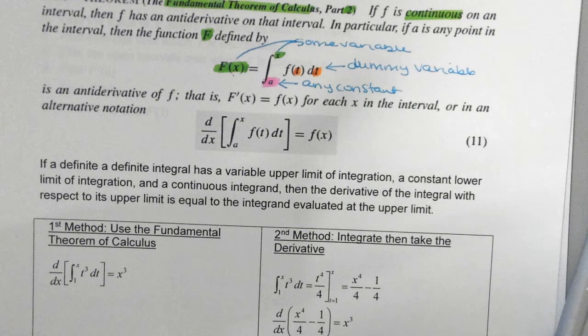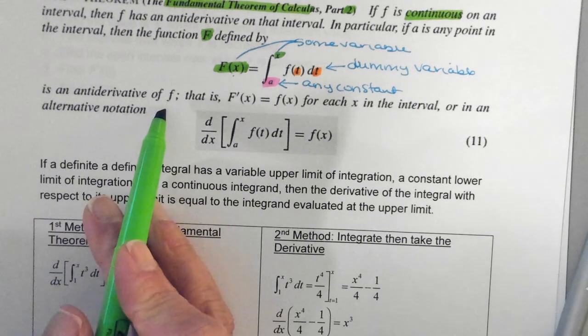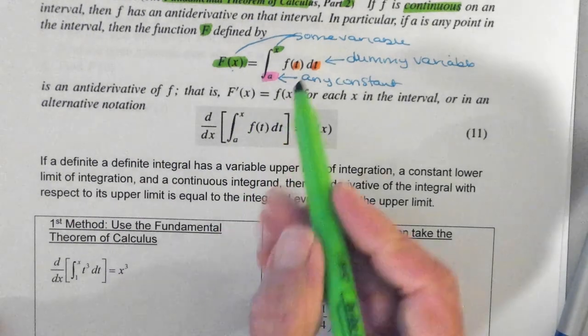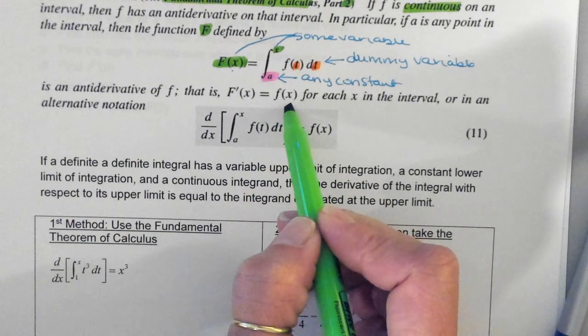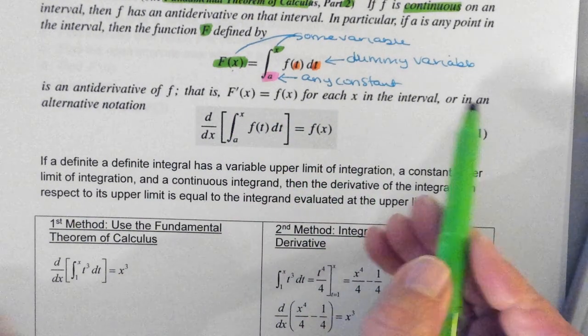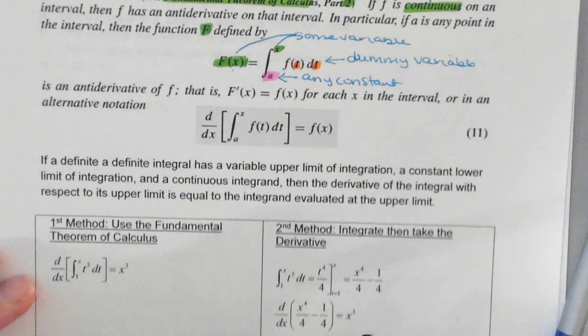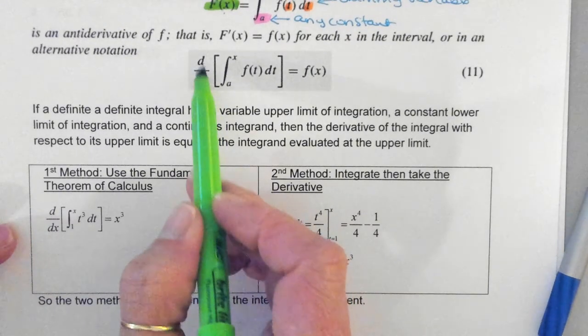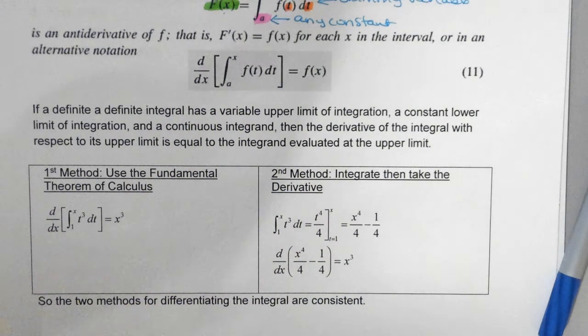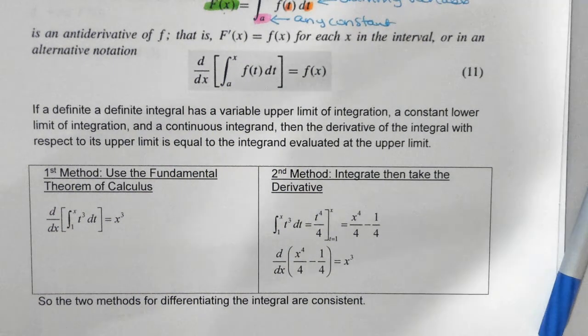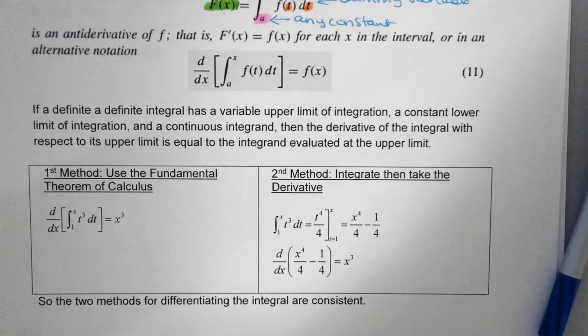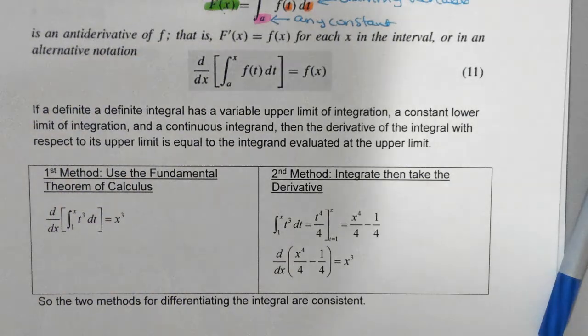So what they're saying about this notation is, this is an antiderivative of f, meaning f prime of x is equal to f of x for each x in the interval. Or, here's the notation. What does this notation mean right here? Can someone remind me? I forget. Take the, it's a command, right? You haven't taken the derivative, it's saying take the derivative.